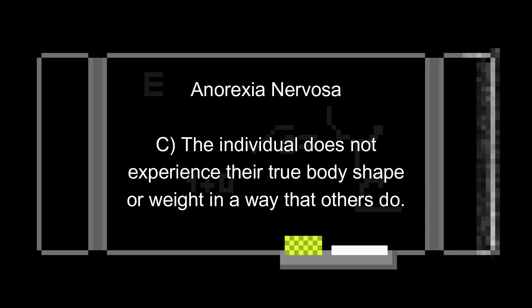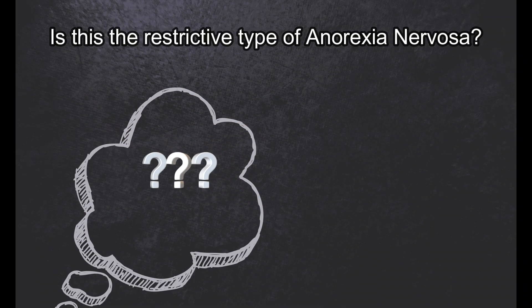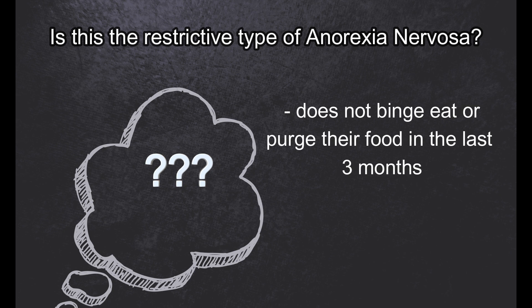Criterion C: the individual does not experience their true body shape or weight in a way that others do. They may evaluate themselves in a manner that is too focused upon the body or weight, and they generally don't recognize the seriousness of the low body weight. A clinician will want to specify if the anorexia nervosa is the restrictive type or the binge eating/purging type.